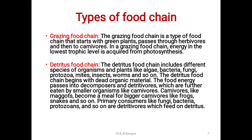The detritus food chain includes different species of organisms and plants like algae, bacteria, fungi, protozoa, mites, insects, worms and so on. The detritus food chain begins with dead organic material. The food energy passes into decomposers and detritivores, which are further eaten up by small carnivores. Carnivores like maggots become a meal for bigger carnivores like frogs and snakes. Primary consumers like fungi, bacteria, and protozoans are detritivores which feed on detritus.